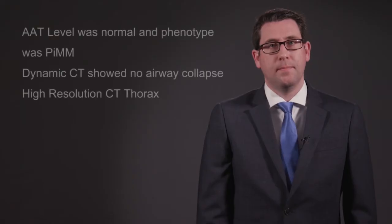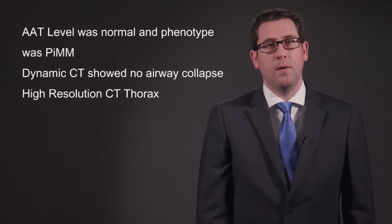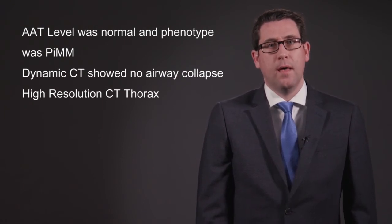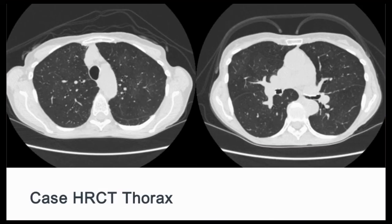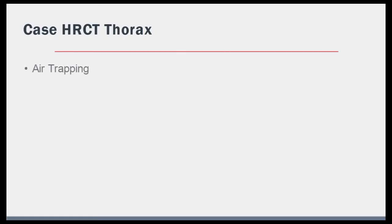Returning to our case, her alpha-1 level and phenotype were both normal. She underwent a dynamic and high-resolution CT thorax and there was no evidence of airway collapse on the dynamic CT. Findings on her high-resolution CT were consistent with a mosaic perfusion pattern and air trapping, highlighted here by the arrows shown. There was also bronchial wall thickening present. At this stage, a differential for air trapping may include hypersensitivity pneumonitis, also referred to as extrinsic allergic alveolitis.